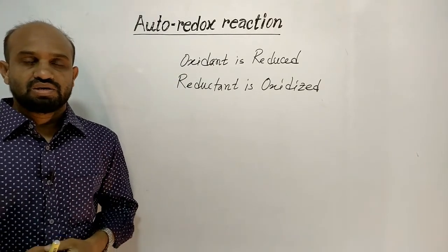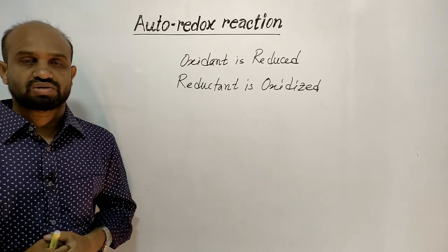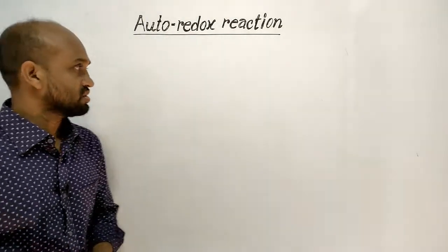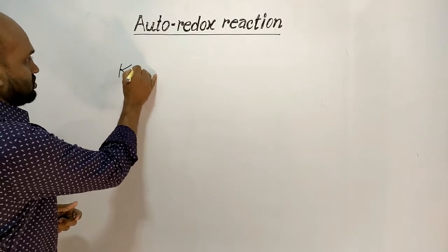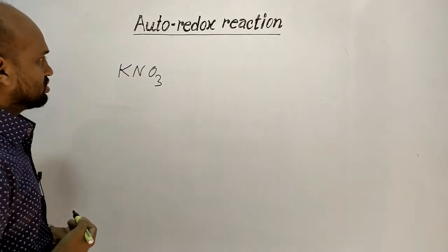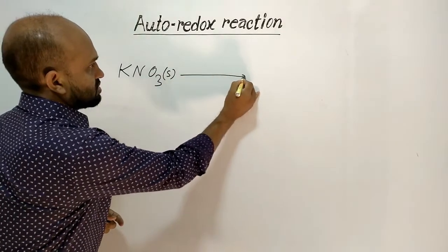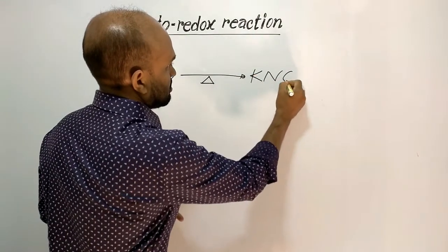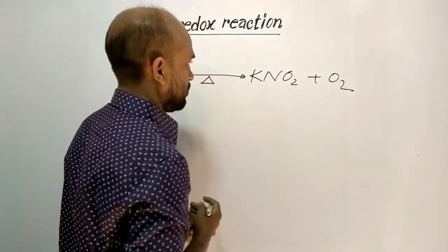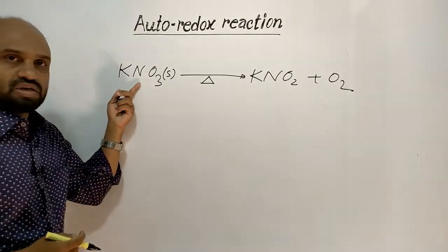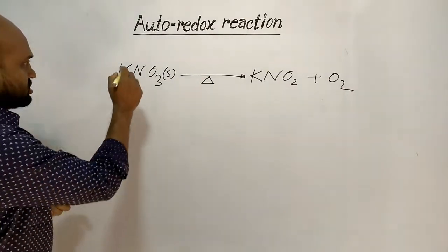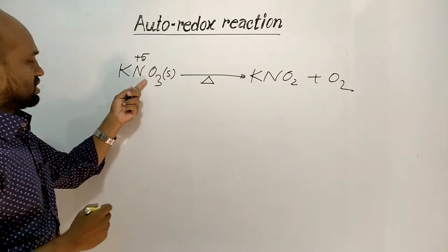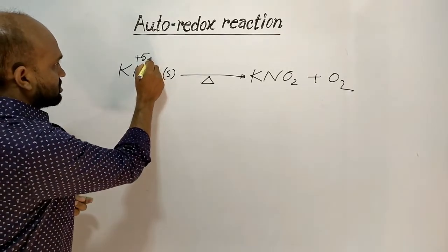Now let's see a chemical reaction in which autoredox happens. The reaction is dissociation of potassium nitrate. When solid potassium nitrate is heated, potassium nitrite and oxygen are formed. In the reactant molecule, the oxidation number of nitrogen is +5 and the oxidation number of oxygen is -2.